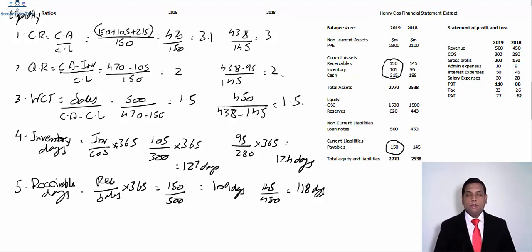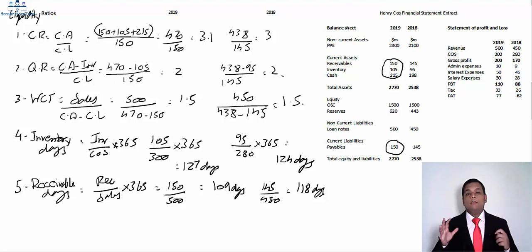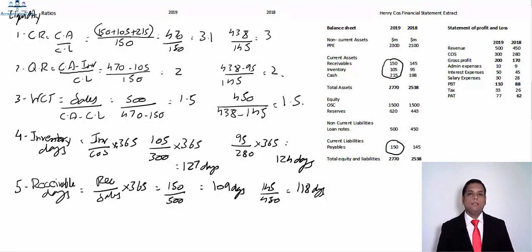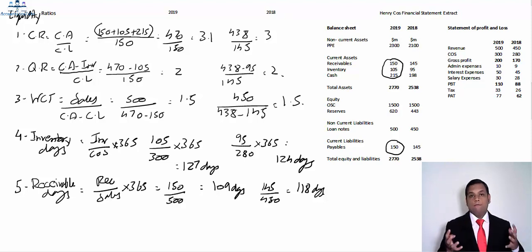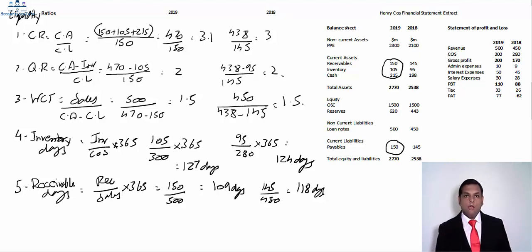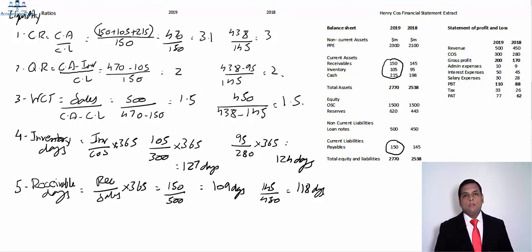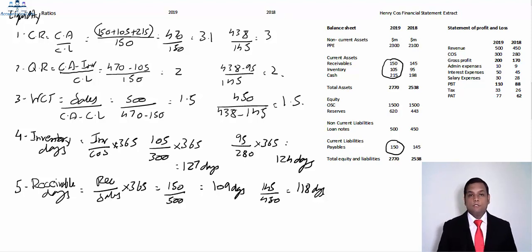This ratio has improved — the company is receiving money more quickly compared to last year. The average collection period dropped from 118 days to 109 days, a difference of around 10 days. This suggests the company may be offering a discount or similar incentive, and as a result more cash is available in the business at any given time, which is a good sign.